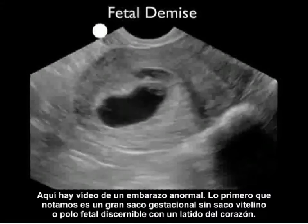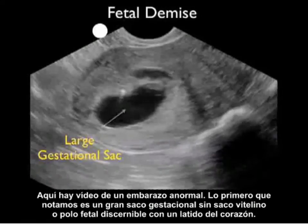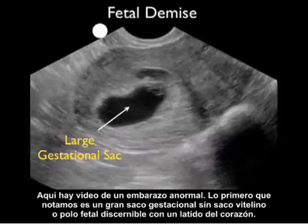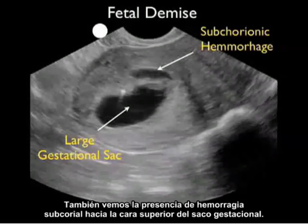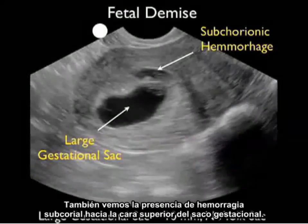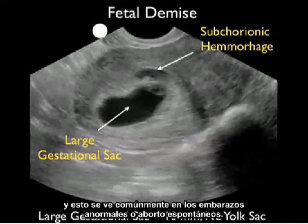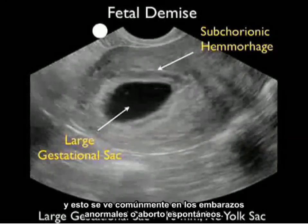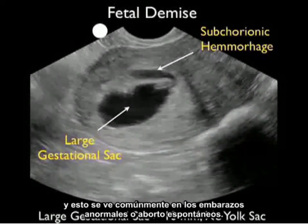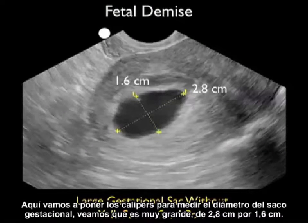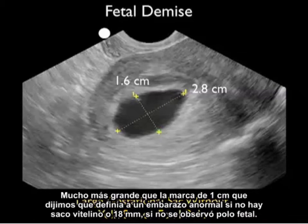Here's video from an abnormal pregnancy. The first thing we notice is a very large gestational sac without a yolk sac or discernible fetal pole with heartbeat. We also see the presence of subchorionic hemorrhage to the superior aspect of the gestational sac — that area of dark or anechoic fluid surrounding the gestational sac, seen commonly with abnormal pregnancies or spontaneous miscarriage. The calipers show a very large sac at 2.8 centimeters by 1.6 centimeters, much larger than the 1 centimeter or 18 millimeter thresholds.